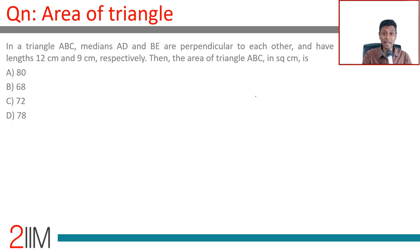In a triangle ABC, medians AD and BE are perpendicular to each other. AD and BE have lengths 12 centimeters and 9 centimeters respectively.